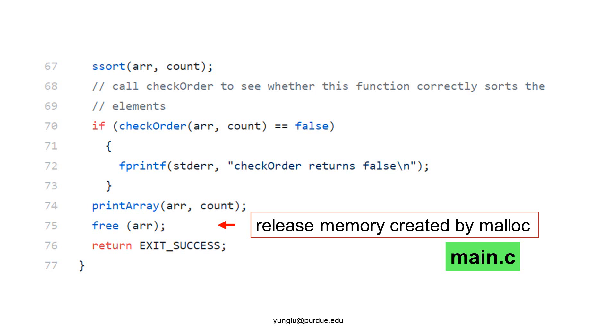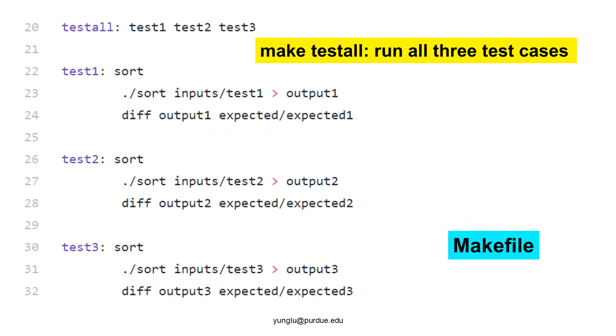Finally, the program uses free to release memory and returns EXIT_SUCCESS. How do we test this program? You can find three test cases in the makefile. The sort program takes each test case and saves the output to a file.